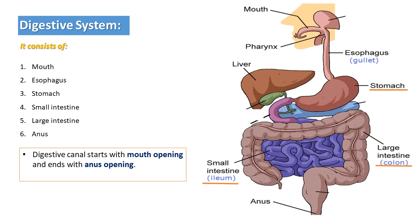The digestive system consists of: number one, mouth; esophagus; stomach; small intestine; large intestine; and anus. The digestive canal starts with the mouth opening and ends with the anus opening.